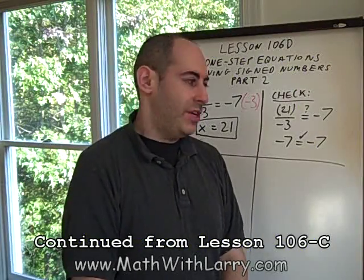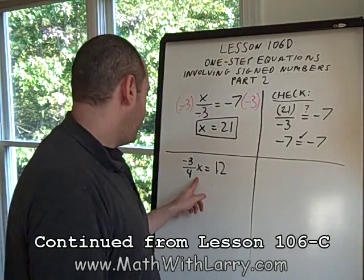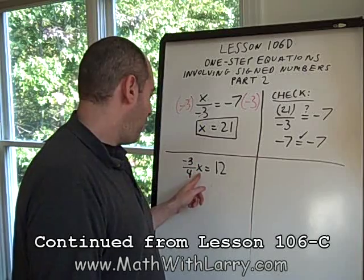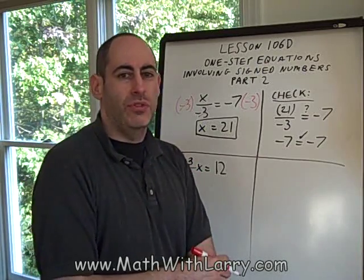Okay, now let's take a look at our second example. Here I have negative three-fourths x equals 12. So negative three-fourths times some unknown equals 12.